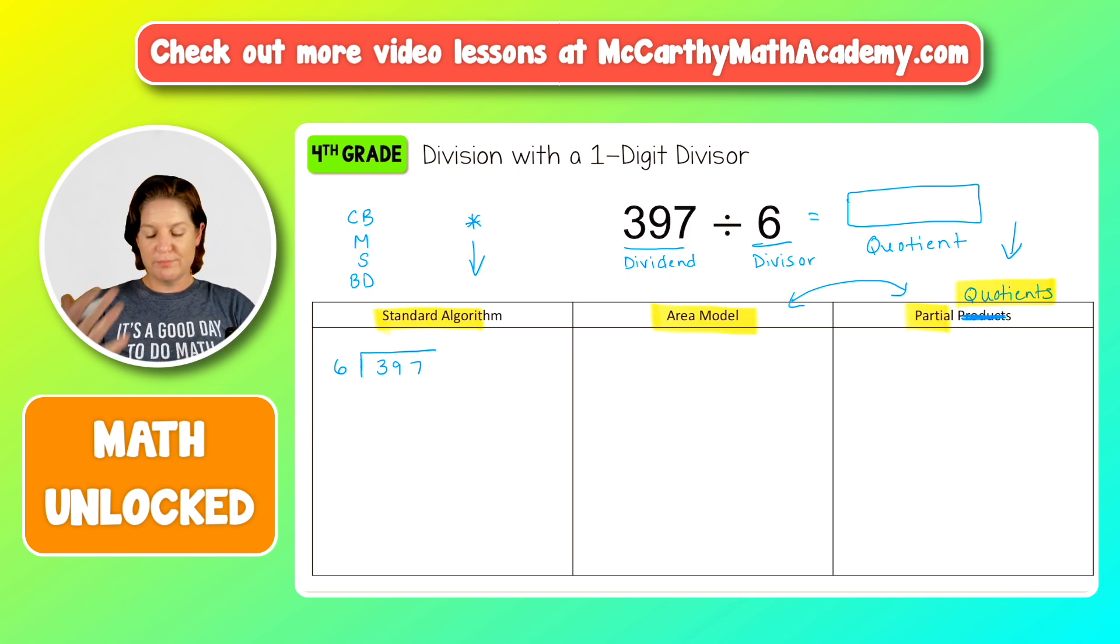If you use divide, multiply, subtract, bring down, that's fine too. Count by, here's what we're going to do. We're going to count by sixes until we get to three. Ready? Six. Oh dear. We already passed three. So guess what? It took zero times to get to three. So what we're going to do now is extend it to 39.